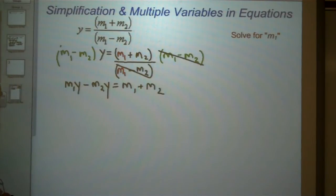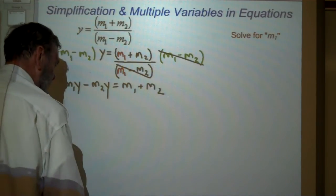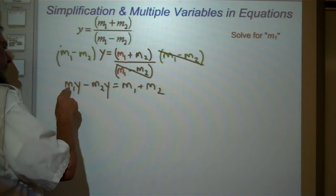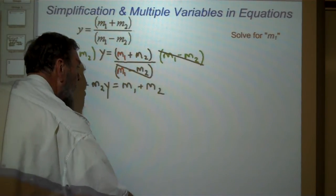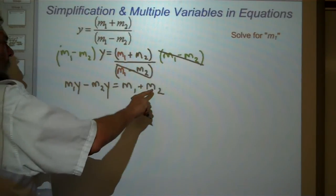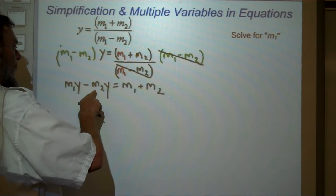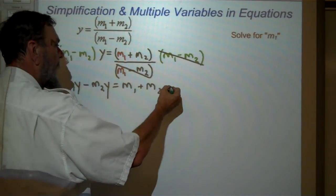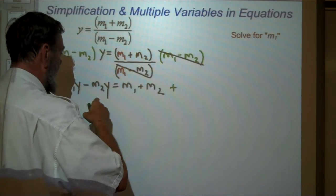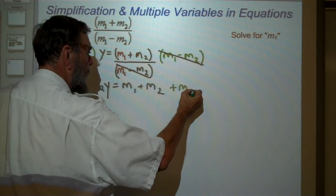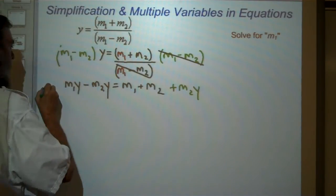Now, I've distributed this. I've got M1 plus M2. How do I get M1 by itself? Well, if you remember, we subtract anything without M1 to the other side. So I'm going to, in this case, add M2Y to both sides.